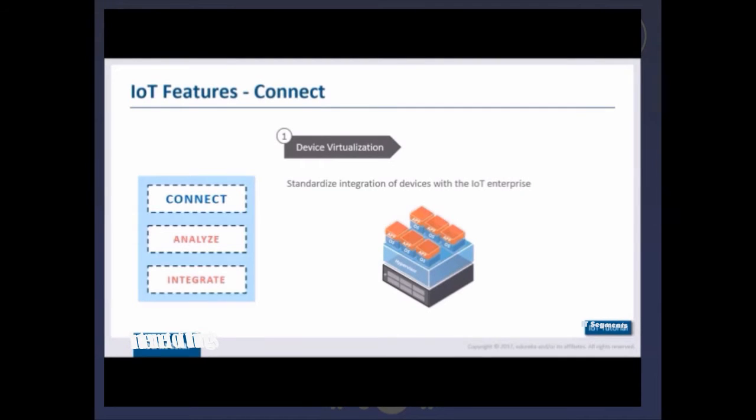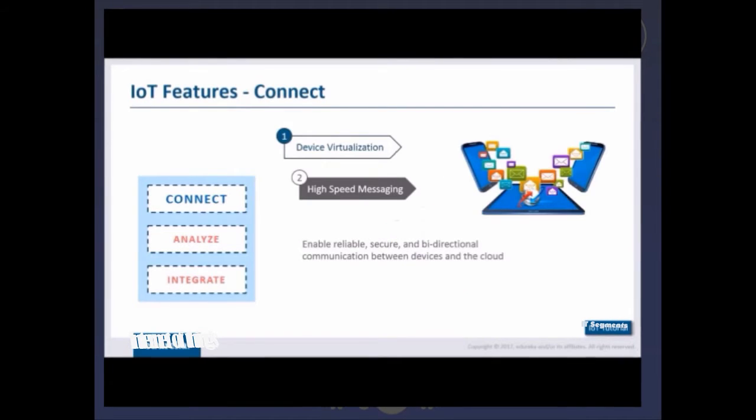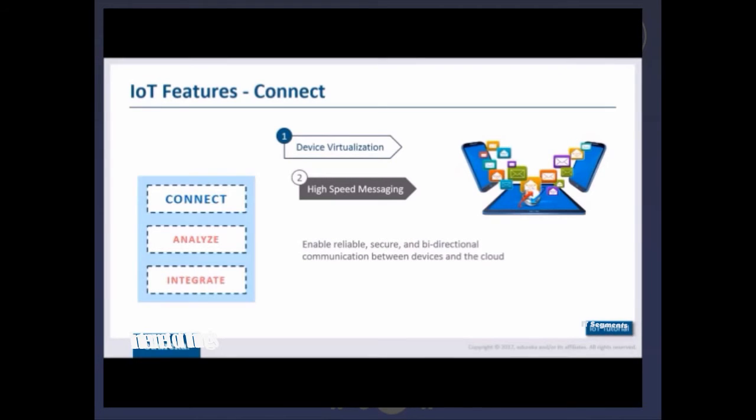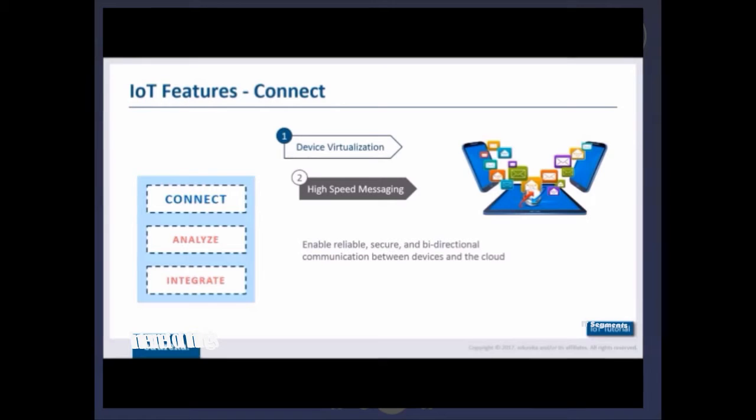Next comes high-speed messaging. I've connected all these devices to my platform, but these devices generate a lot of data. This data will help us understand how we can improve the overall system and provide the user with better experience. For that, we need reliable, secure, and bi-directional communication between devices and the platform.